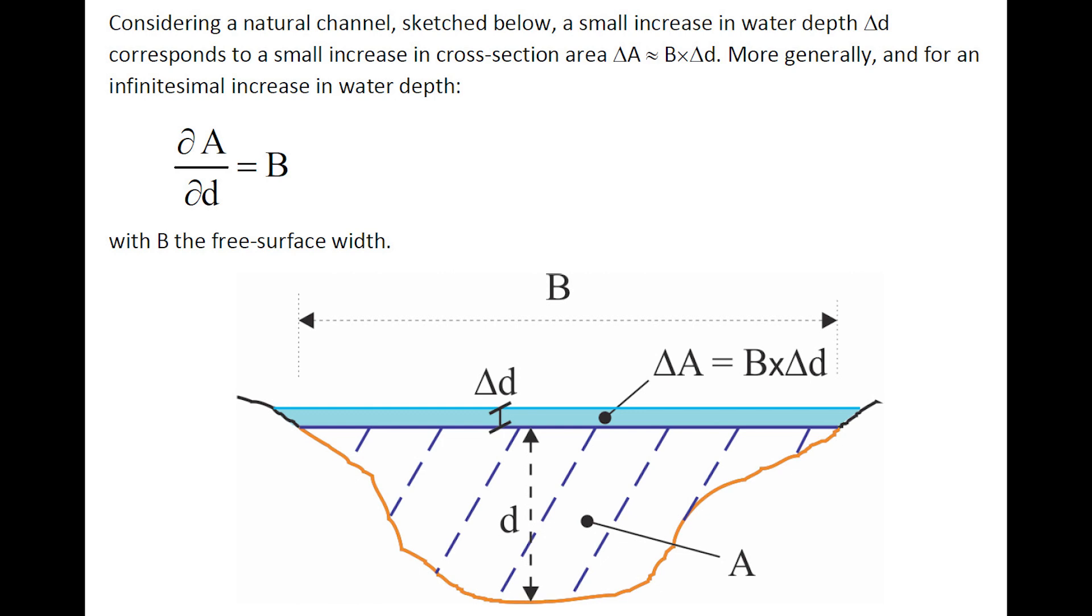And marginally, for an infinitesimal increase in water depth, the differential of the cross-section area with the water depth would be equal to the free surface width, B.